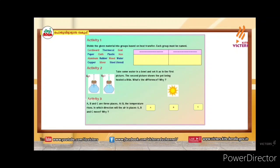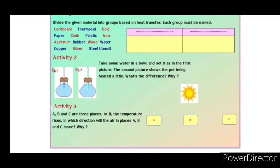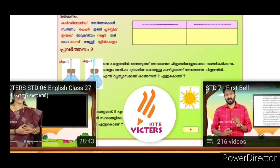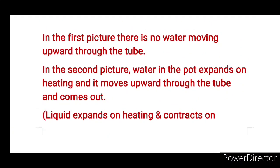We need to add some water in your bowl and set it as in the first picture. The second picture shows the pot being heated a little. What is the difference and why? In the first picture there is no water moving upward through the tube. In the second picture, water in the pot expands on heating and it moves upward through the tube and comes out.